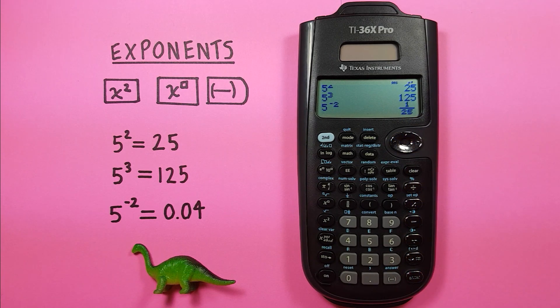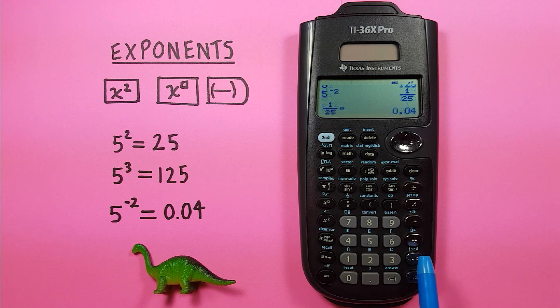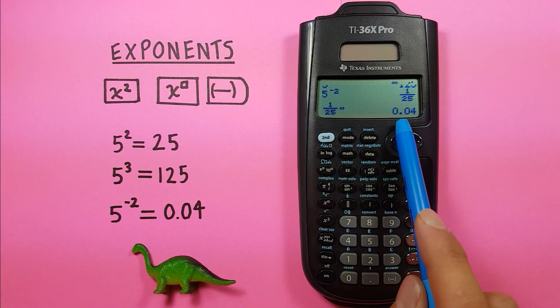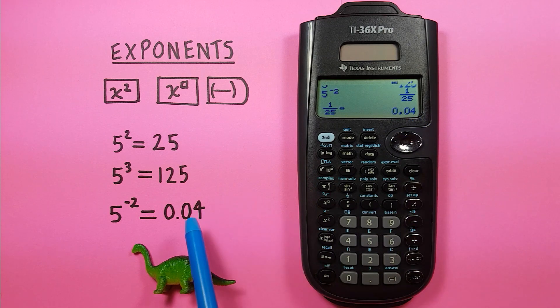Now this calculator likes to give us fractions, but we can easily convert this back to a decimal with this key here with the two arrows going left and right. Press that once and you can see 1 over 25 has converted to 0.04, which is correct.